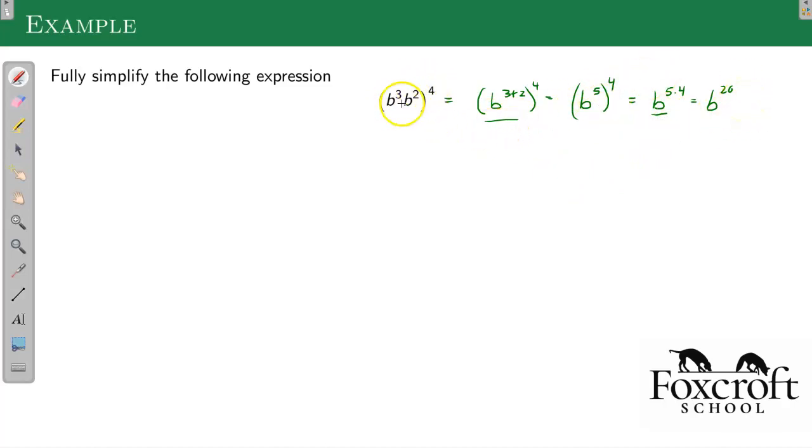Another way you could do this one is this 4 exponent kind of distribute. You can get b to the 3 times 4, b to the 2 times 4, which is b to the 12th and b to the 8th. And then you could add them. And again, you get the same final answer.